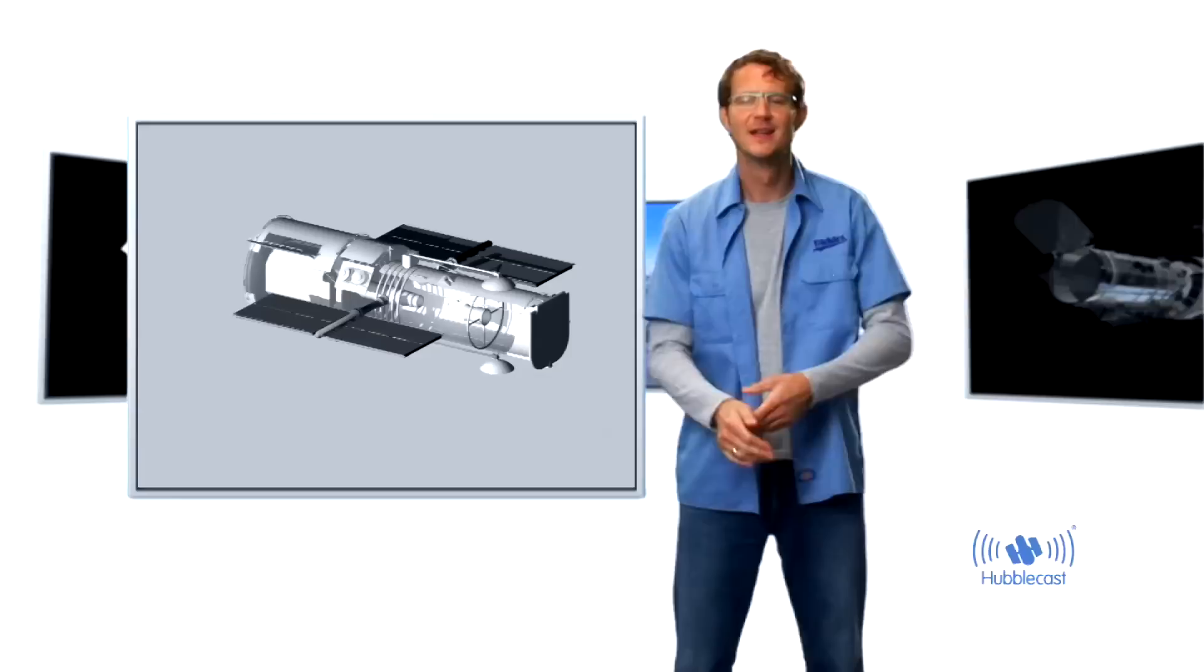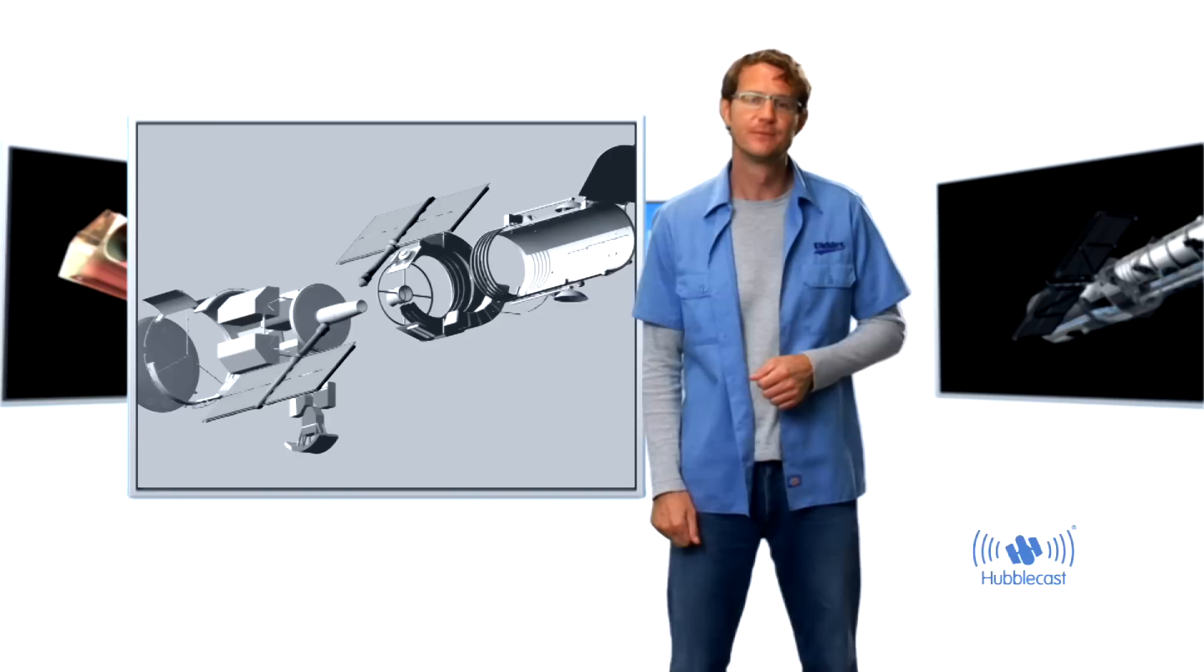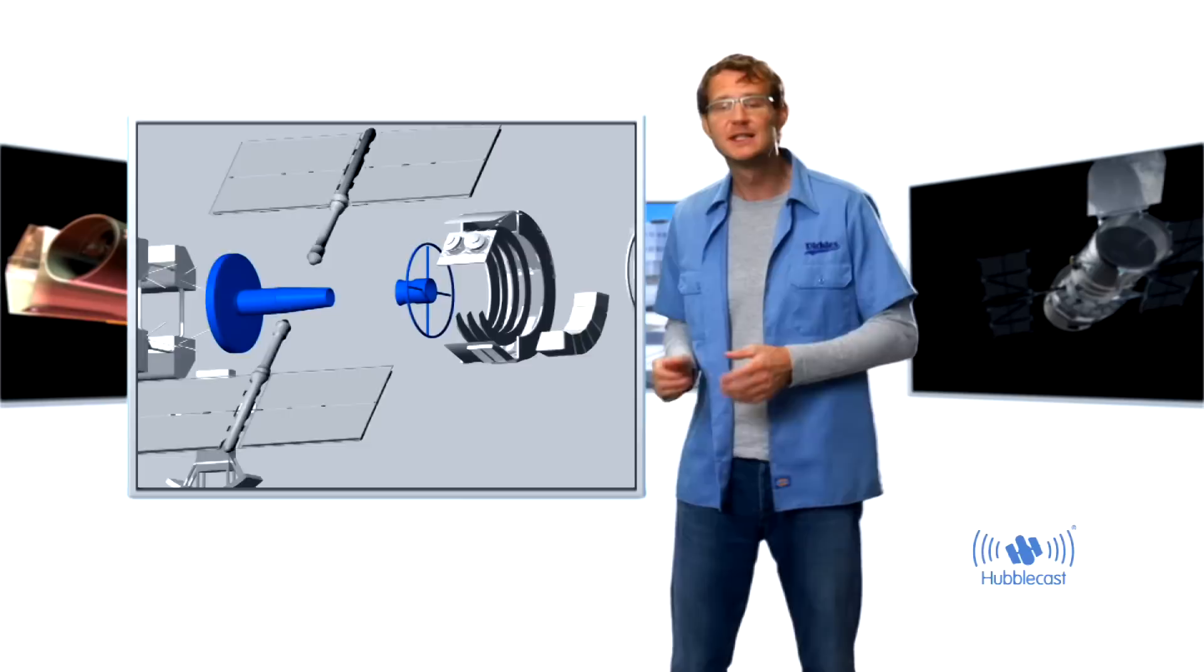So how does a telescope work? Well, common to almost all telescopes, regardless of size or purpose, is that they have a mirror, some instruments and a few supporting systems. Now the main function of the mirror is to collect as much light as possible from distant stars and galaxies. It is not to magnify anything, as many people think. Then there are a number of secondary mirrors that send the light to the instruments.